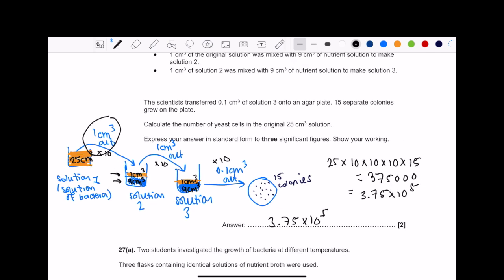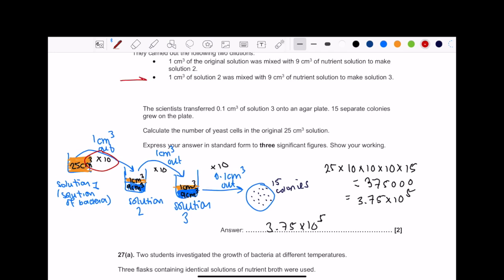What's really important is that every time you take out 1 cm³ from each solution, put times 10. This represents our dilution factor. They've done it again: 1 cm³ of solution 2 was mixed with 9 cm³ of nutrient solution to make solution 3. Again, 1 cm³ out, so we've got another times 10 dilution factor.